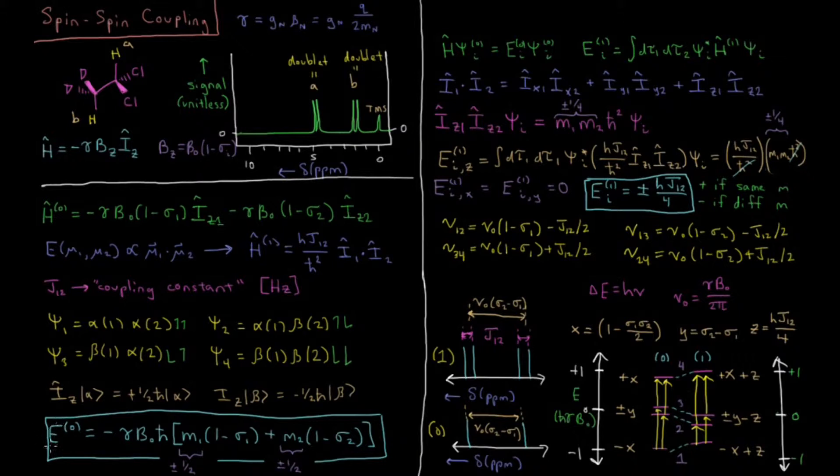And this gives us a zero order energy. Our zero order energy is just H psi nought equals E nought psi nought, the Schrodinger equation for the reference system, and that's just minus gamma B times their Z component of the spin angular momentum quantum number, plus or minus one half, depending on whether it's alpha or beta, M1 times 1 minus sigma 1, plus M2 times 1 minus sigma 2. So it depends on their shielding, and it depends on whether they are spin up or spin down, what the energy levels are.